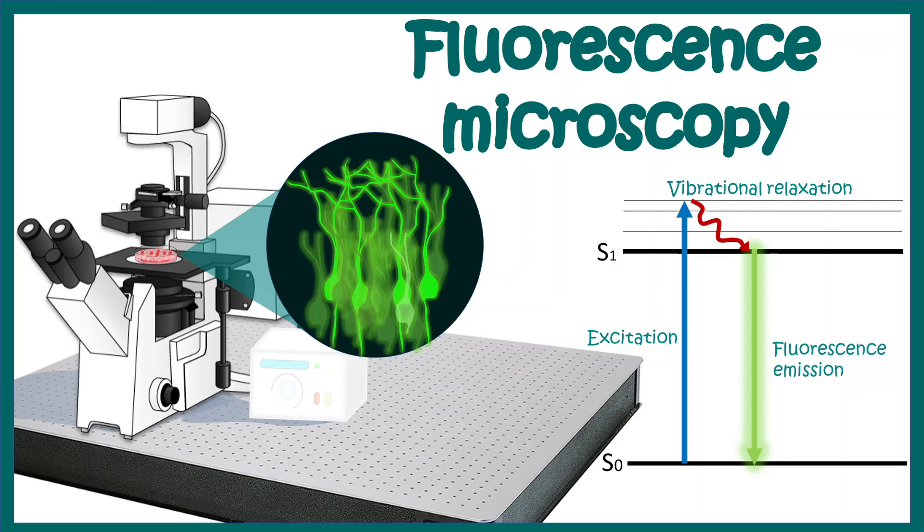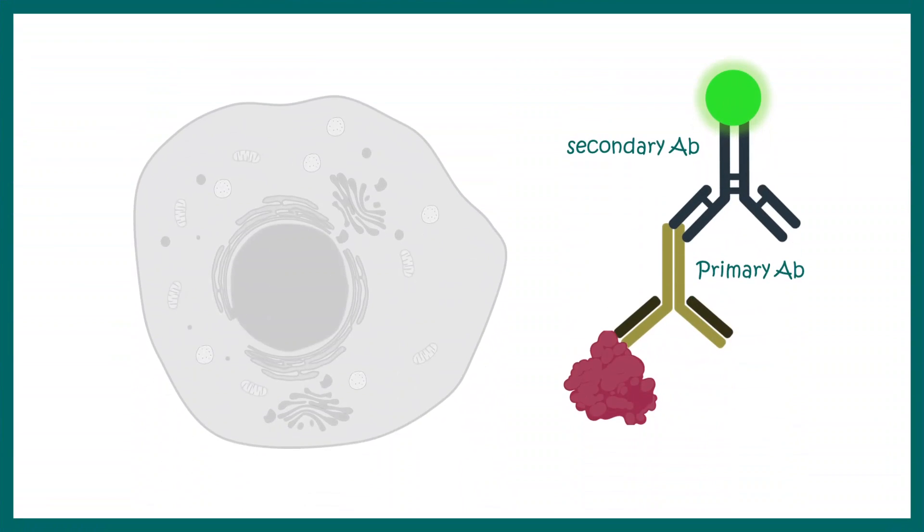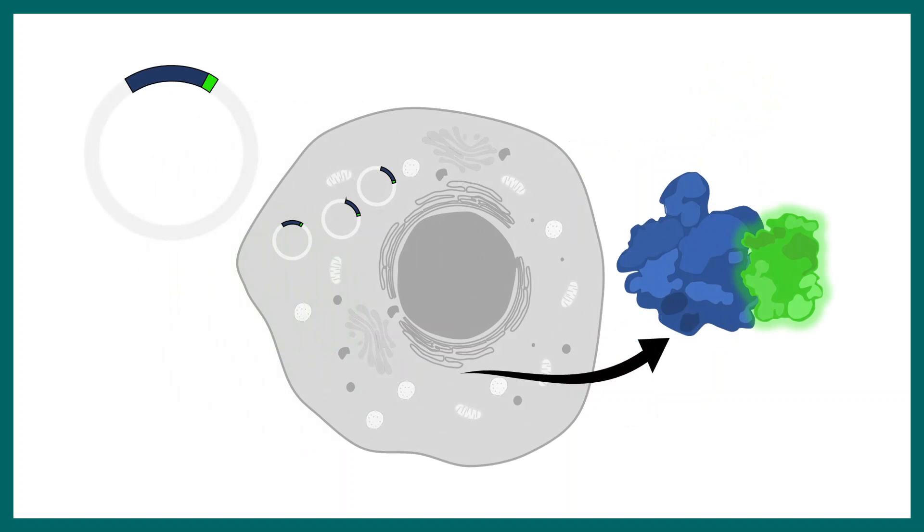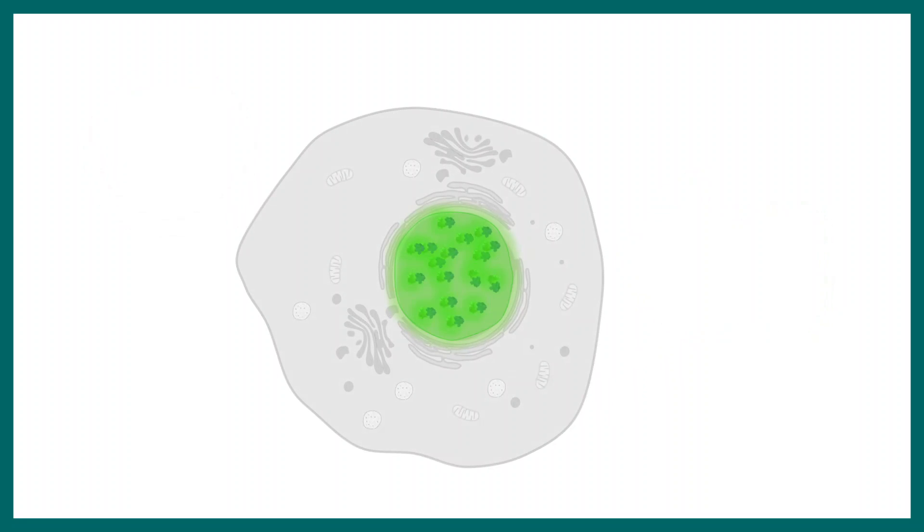To begin with, we need a fluorescently labeled specimen. We can use the technique of immunohistochemistry to label our specimen. In this case, we have a nuclear antigen which we can label with a primary antibody and then a fluorophore-conjugated secondary antibody. We can also express fluorescently labeled proteins or GFP-labeled proteins in a particular cell to visualize a particular structure or where they localize. The moral of the story is we need a fluorescent specimen to begin with.